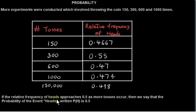So if the relative frequency of heads approaches 0.5 as more tosses occur, then we say that the probability of the event heads occurs, which is written P(H), is 0.5.